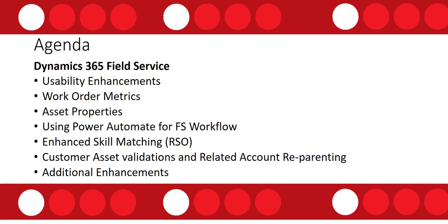What I'll be talking about today are the following enhancements: usability enhancements, work order metrics, asset properties, the ability to turn on Power Automate for Field Service workflows, enhanced skill matching which is for RSO only, customer asset validations and related account reparenting, and some additional enhancements that were not available for Early Access but are still coming according to the Microsoft Docs website.